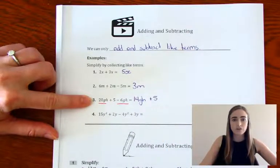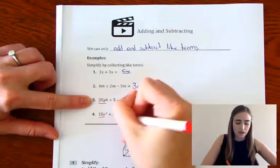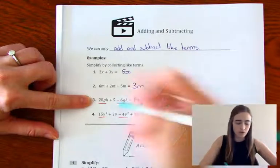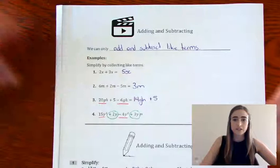Now last one. We've got 15y squared, and that matches up with our minus 4y squared. And we've also got that 2y and the 3y. So we'll match them up.